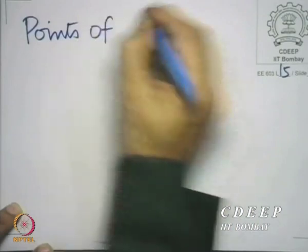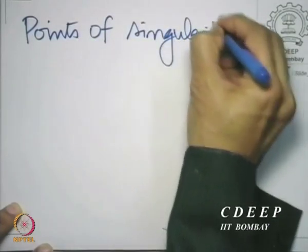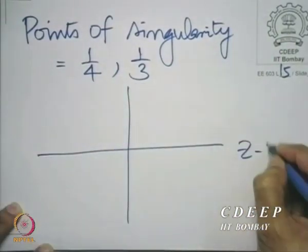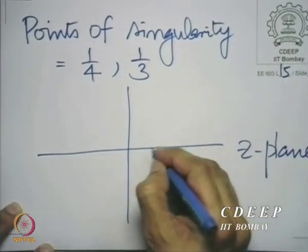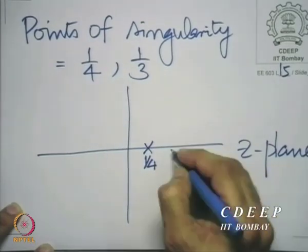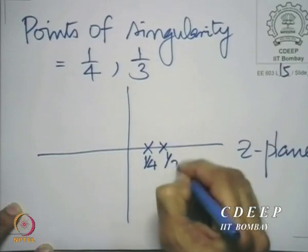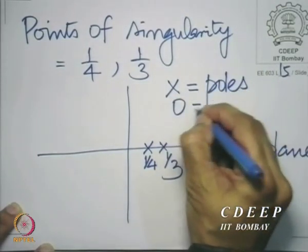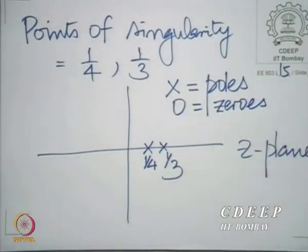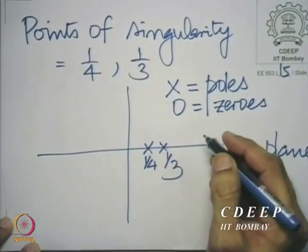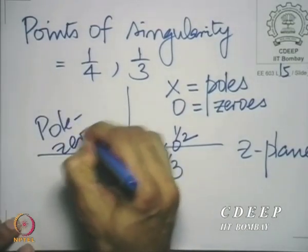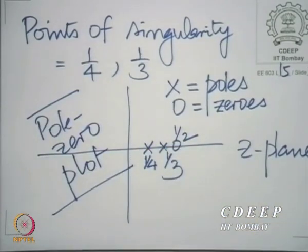The points of singularity are ¼ and ⅓. Let us mark them in the Z-plane using the following convention: crosses denote poles — the points where the denominator becomes zero — and circles denote zeros. So we have two poles and a zero at z = ½. This is called the pole-zero plot for the Z-transform.